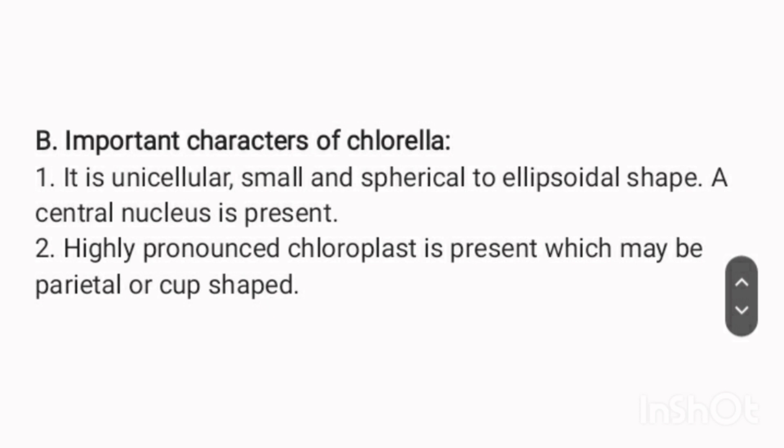Important characters of Chlorella. 1. It is unicellular, small, and spherical to ellipsoidal in shape. A central nucleus is present. 2. A highly pronounced chloroplast is present, which may be parietal or cup-shaped.